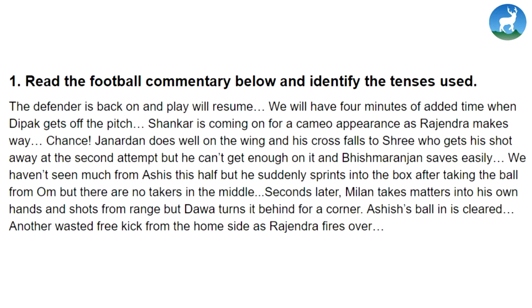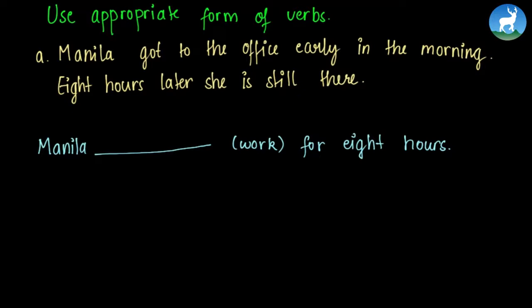Next, we have a very simple and small grammar exercise where we need to use the appropriate form of the verb that's given in the bracket. Malina got to the office early in the morning. Eight hours later, she's still there. Now since the event happened in past, Malina got to the office early, and eight hours later she's still there, we're in the present. So since the past and present is connected, an event occurred in past and is still continuing in the present, we use has been. So Malina has been working for eight hours.